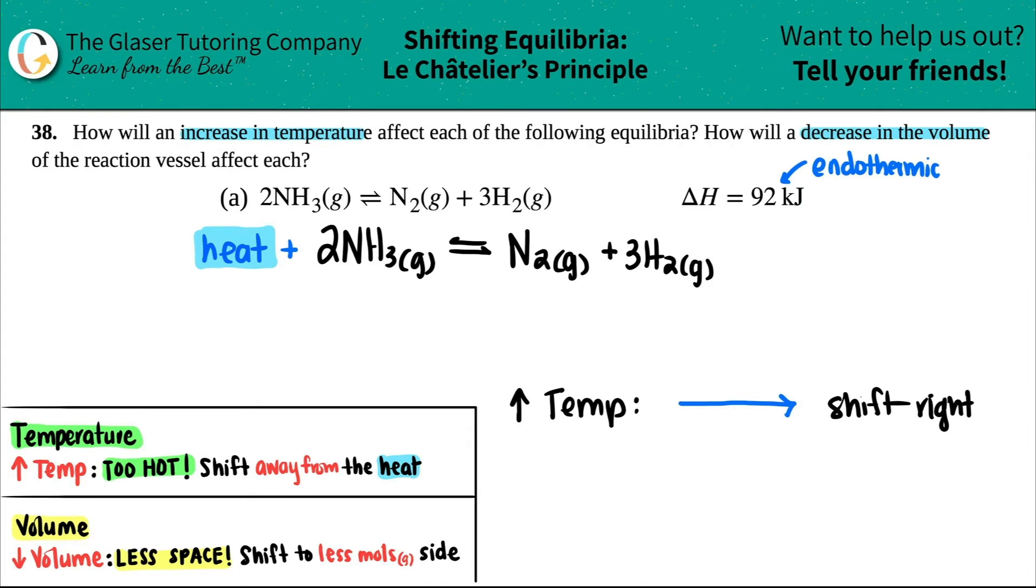What does decreasing the volume mean? Volume is talking about the space inside the container, or in this case, the reaction vessel. If you have lower volume, you have less space.